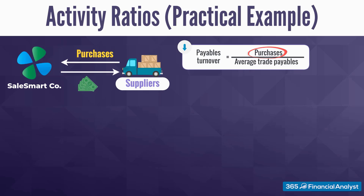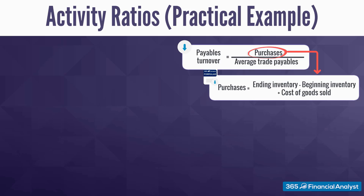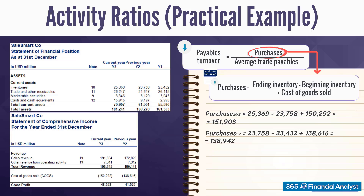Where do we get the purchases amount from? For simplicity, you can use the following formula: the amount of purchases made during a given year is equal to the cost of goods sold plus the change in inventory. In other words, this is the full amount of inventory purchased, irrespective of whether it is sold or remains in stock. So using this equation, we figure out that purchases in year 3 are: inventory at the end of this year ($25,369 million) minus inventory as of last year ($23,758 million) plus the absolute value of the cost of goods sold from the income statement — this makes $151,903 million. In a similar fashion, we obtain the amount of purchases in year 2, that is $138,942 million.